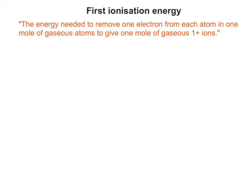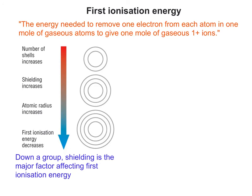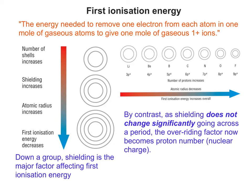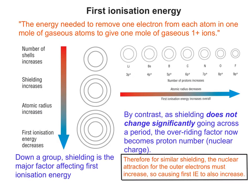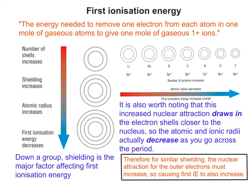First ionisation energy is defined at the top of the page according to our specification. Going down a group, shielding is by far the major factor affecting first ionisation energy values. However, as you go across a period, the shielding doesn't really change — not significantly at least. So the overriding factor now must be the proton number, sometimes called nuclear charge. Because you have similar shielding across a period, the first ionisation energy must increase because the overriding factor is the increase in nuclear charge, which leads to an increase in nuclear attraction. Another consequence of this extra nuclear attraction is that the electron shells are drawn in closer to the nucleus, and therefore atomic and ionic radii actually decrease as you go across the period — they get smaller.